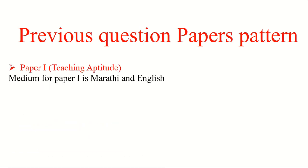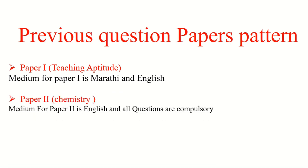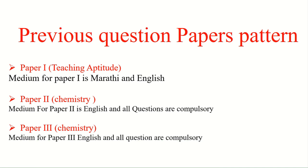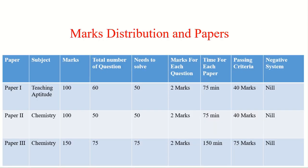Previously, the exam had three papers. Paper one's medium was Marathi and for others it was English. Paper one was a general paper for all subjects, and paper two and three were for specific subjects like chemistry and other subjects. Previously there were three papers: paper one for 100 marks, paper two for 100 marks, and paper three for 150 marks, with different passing criteria for each. Each question carried two marks.